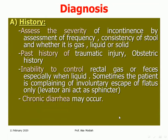The diagnosis of the old complete perineal tear is by history taking and examination. History assesses severity by evaluating frequency and consistency of stool — whether gas, liquid, or solid — past history of traumatic injury, obstetric history of previous difficult delivery, instrumental delivery, or precipitate labor. Symptoms include inability to control rectal gas or feces, especially when liquid, involuntary escape of flatus only, and chronic diarrhea.